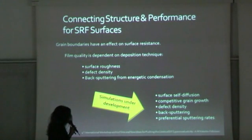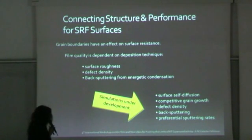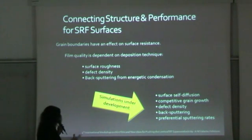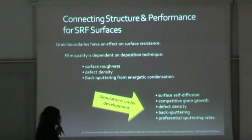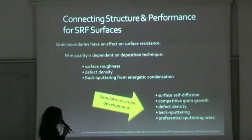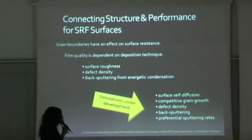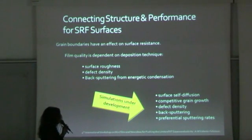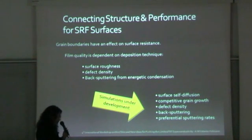Simulations are also under development to understand how to connect the structure and performance of SRF surfaces. This is in the context of a PhD thesis with Daniel Baring under Larry Phillips at the lab, to understand how surface diffusion, competitive grain growth, defect density, back sputtering — as we heard earlier — and preferential sputtering rates affect the roughness of the film and defect density.